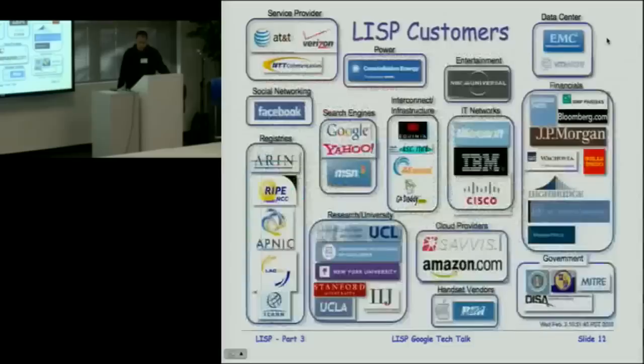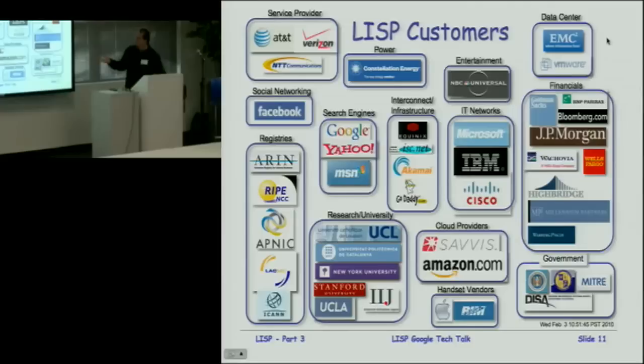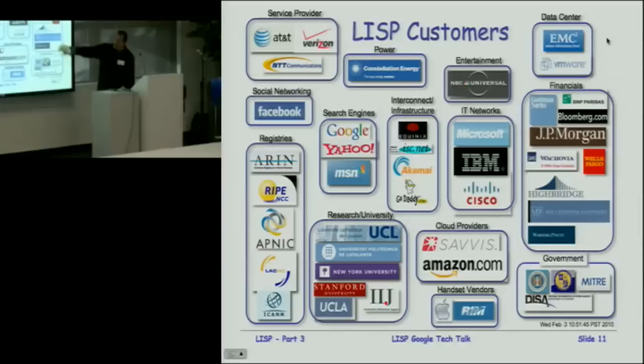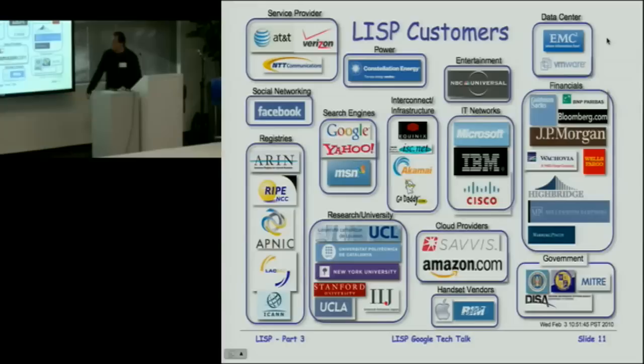These aren't exactly customers yet, but these are people interested in LISP — either people that have received a LISP presentation, are on the network, or are proactively helping design it. They're from many different sectors. The financials are very interested because IP address management and moving virtual machines around is a big problem they want to solve. Cloud providers are interested because they want to move topologies quite a bit. Handset vendors are interested too, and Google should probably be in there as well.